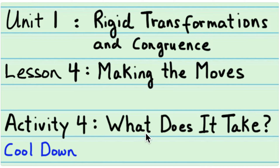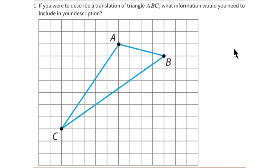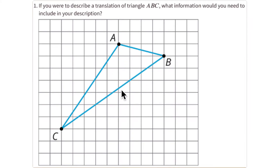This is Activity 4, the cool-down for Lesson 4 of Unit 1: Rigid Transformations and Congruence. In this activity you're given three copies of the same triangle and asked about a translation, a rotation, and a reflection. Each time you're asked: what information would you need to include in your description of that transformation, or what would someone need to know to perform it?